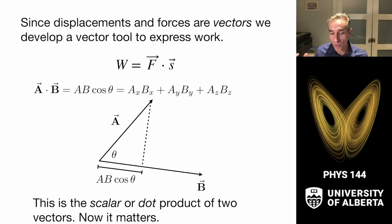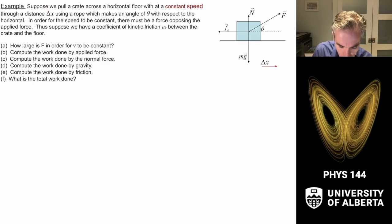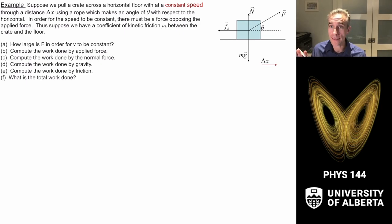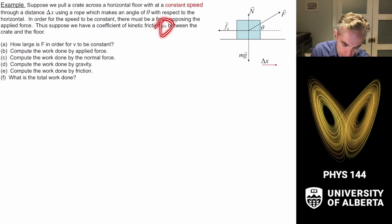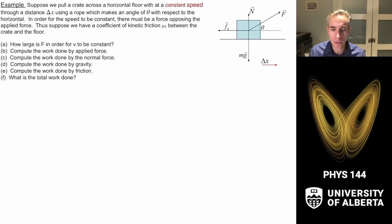Here's an example courtesy of Dr. Kaminsky: we pull a crate across a horizontal floor at constant speed through a distance Δx using a rope at angle θ with respect to the horizontal. For the speed to be constant, the system is in equilibrium — no net acceleration — so there must be a kinetic friction force μ_k opposing the applied force. The question is: how large must F be in order for the speed to be constant?